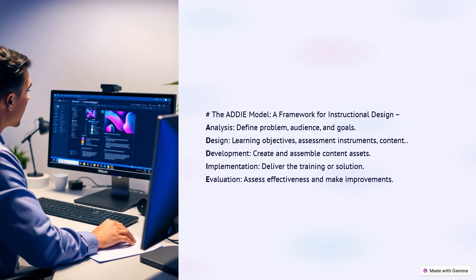The second D stands for Development: create and organize learning materials. I stands for Implementation: deliver the training or course. E stands for Evaluation: assess effectiveness and make improvements. For example, a company designing an onboarding program for new employees will use ADDIE to create an effective training process.